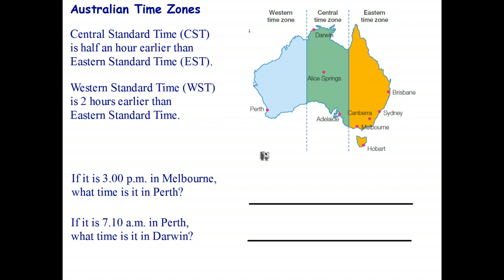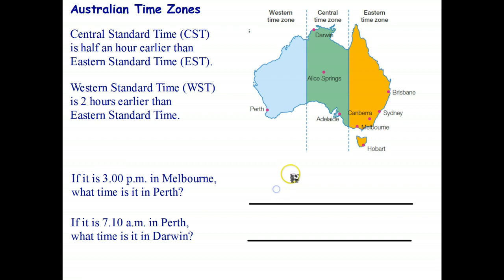Okay, if it's 3 p.m. in Melbourne, what time is it in Perth? Well, all we have to do is say it's two hours earlier. So two hours before 3 p.m. is 1 p.m.